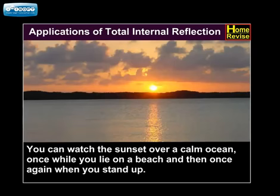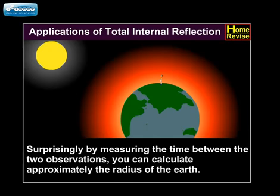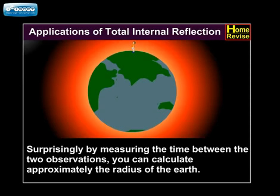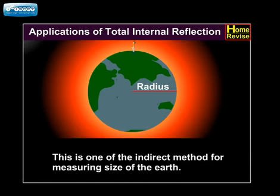You can watch the sunset over a calm ocean, once when you lie on a beach and then once again when you stand up. Surprisingly, by measuring the time between the two observations, you can calculate approximately the radius of the earth. This is one of the indirect methods of measuring the size of the earth.